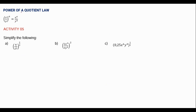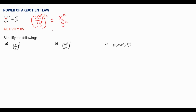In this lesson we're going to revise the power of a quotient law. The power of a quotient is equal to the power of each factor in the numerator and denominator raised individually to the exponent outside the bracket. Just like the power of a product law, we are distributing the exponent outside the brackets into the numerator and the denominator. So in this case we have (x/y) to the power a, we are raising x to the power a and raising y to the power a, giving us x to the power a over y to the power a.